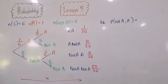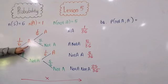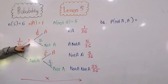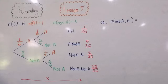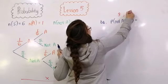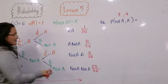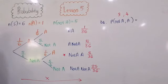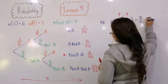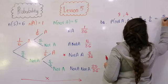Question B4 asks: what is the probability of getting a three on the first roll and a four on the second roll? Three is not part of my A's — three is a not-A, and four is an A. Getting a three means I want not-A first, and getting a four means I want A second. So I'm looking for not-A then A: 5/6 × 1/6 = 5/36.